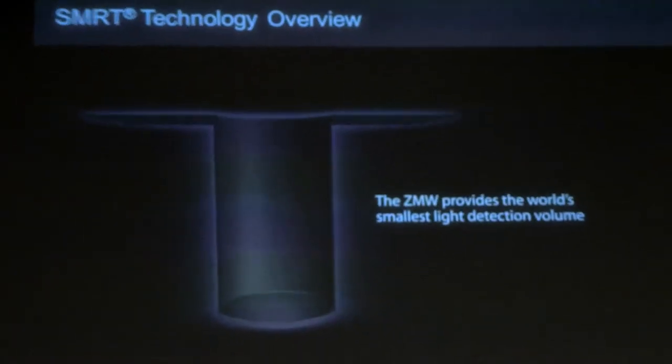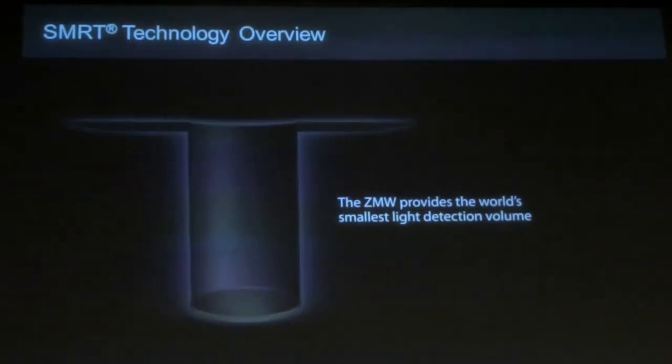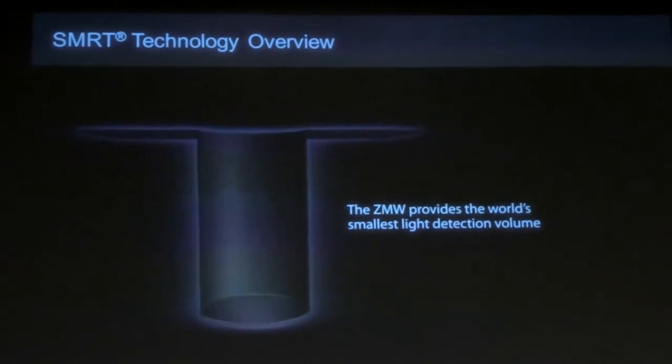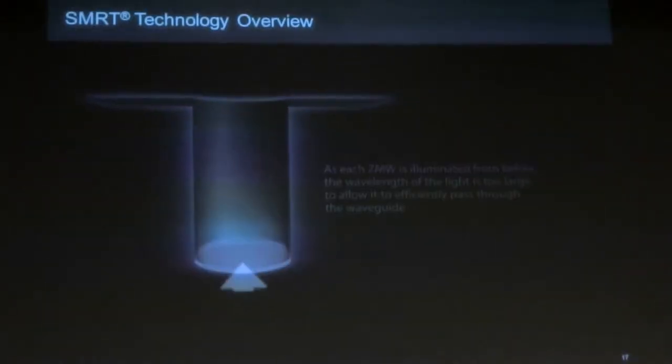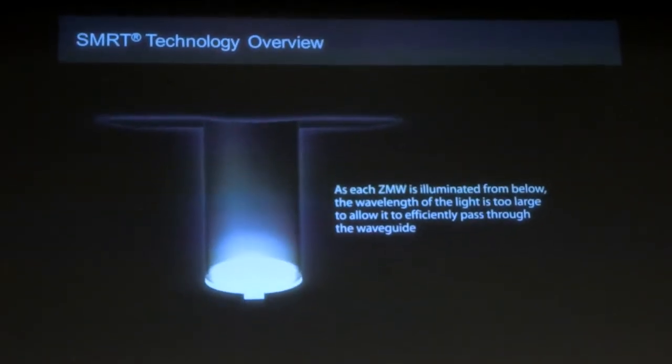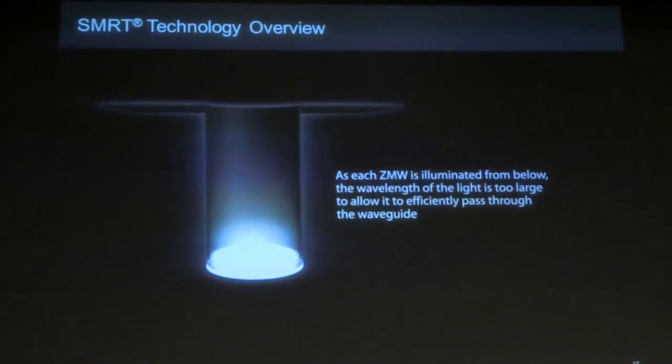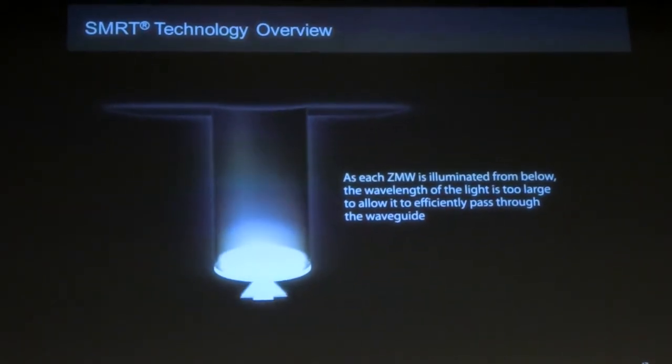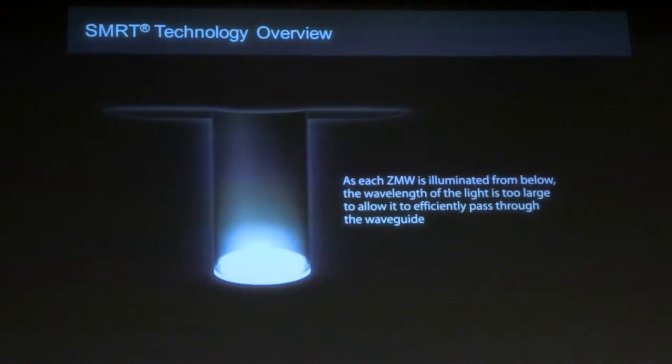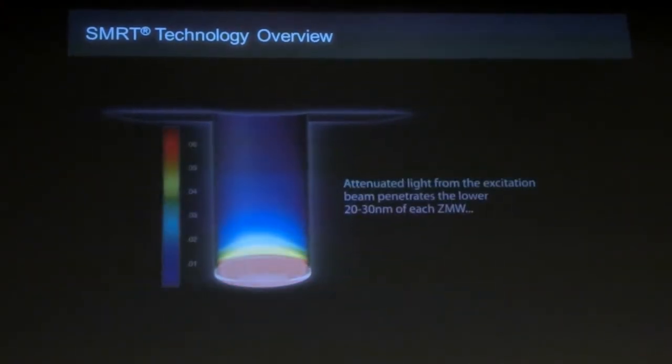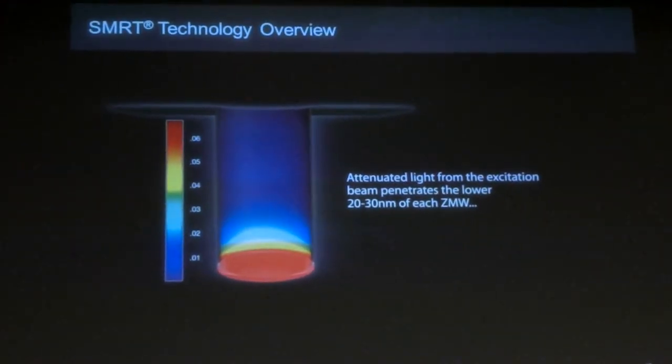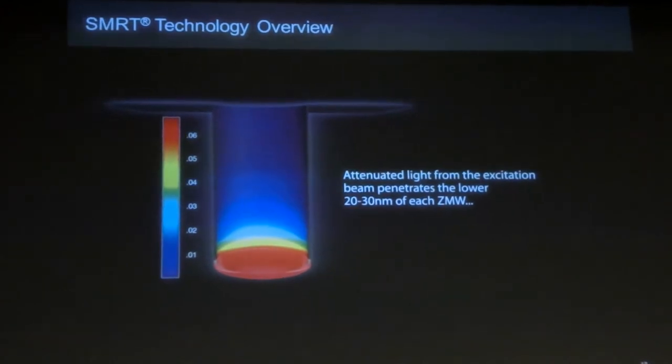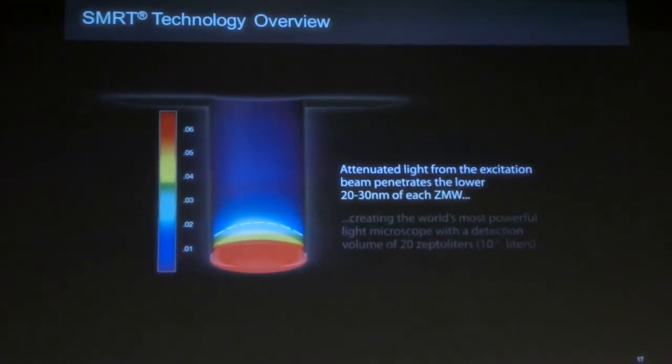And these zero-mode waveguides create this detection volume at the bottom, which is the smallest volume possible. What happens is the wavelength, the light wavelength, is much, much larger than the size or diameter of the smart cell itself. So light's only allowed to penetrate just through the very bottom of the zero-mode waveguide.